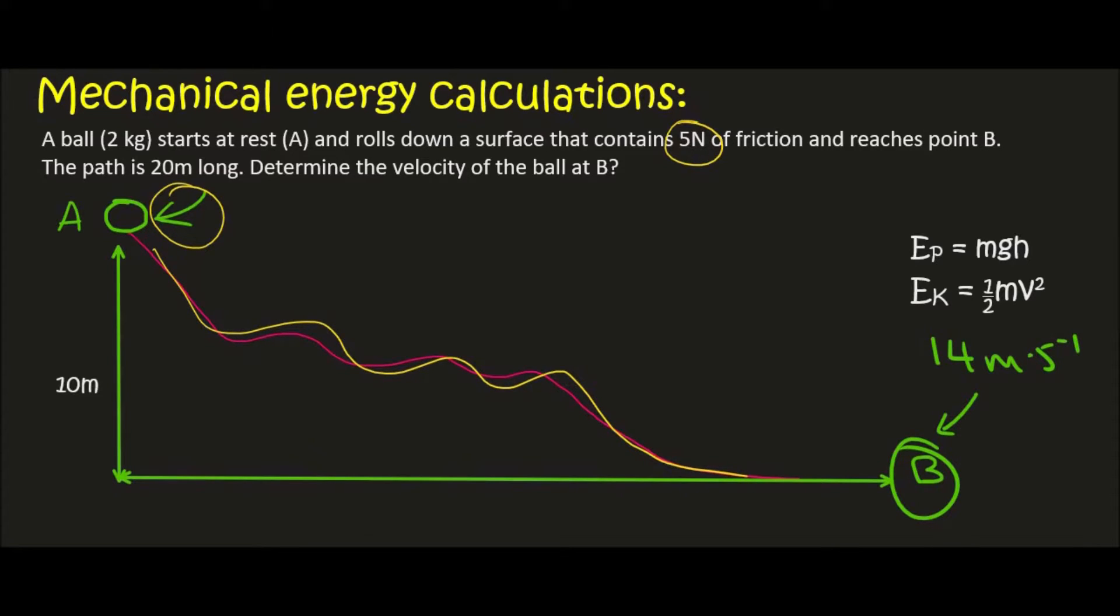And so what we can do is we can first calculate the energy of the object at A. We know that the total energy is called mechanical energy and that's equal to the potential plus the kinetic. But at point A the object is at rest and so it doesn't have any kinetic energy, so the only energy is due to potential energy.